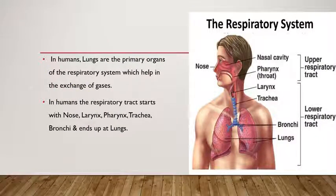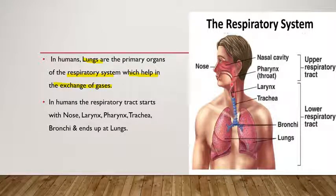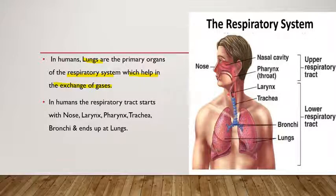Now we'll talk about the human respiratory system and the various organs involved. Lungs are the primary organs of the respiratory system, as humans are terrestrial organisms. The respiratory tract starts with the nose, followed by the pharynx, then larynx, then trachea, then bronchi, and finally the lungs. We'll study each organ individually starting from the nose.